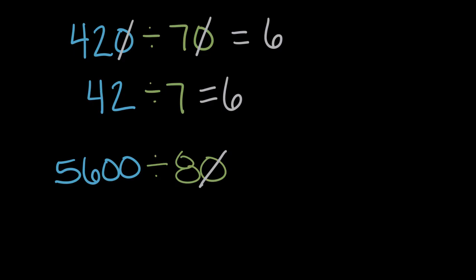If I cancel out this one, I can cancel out one on the other side. I can't cancel both of them. Over here, there were two. We have to cancel the same amount of zeros on both sides. And now we end up with 560 divided by eight.